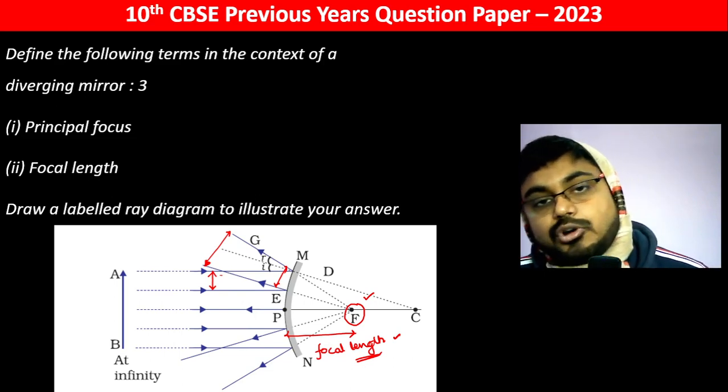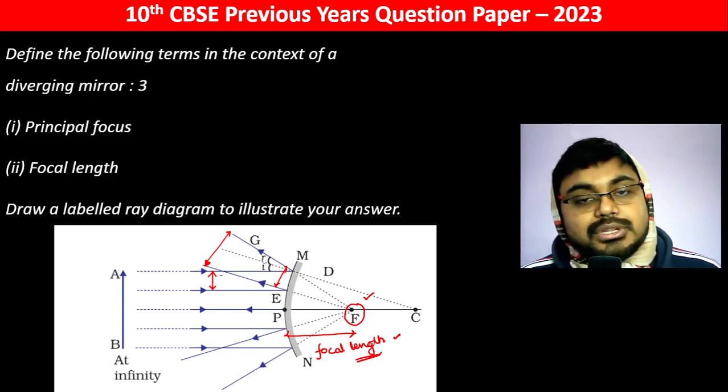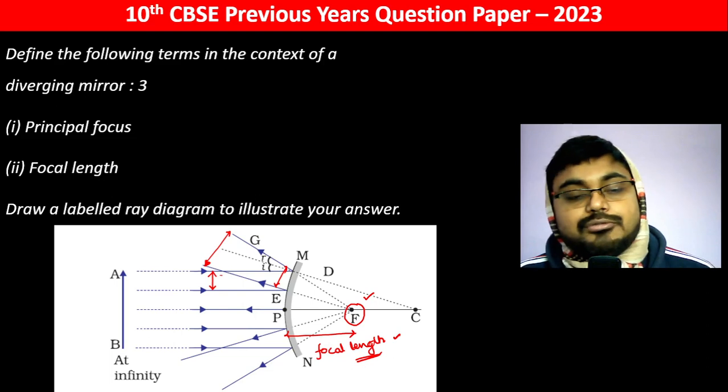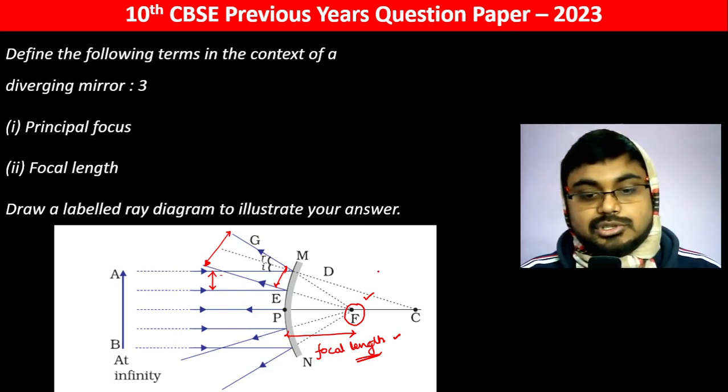What is the focal length? The distance from the pole to the focus is known as the focal length. This is the labeled ray diagram to illustrate.